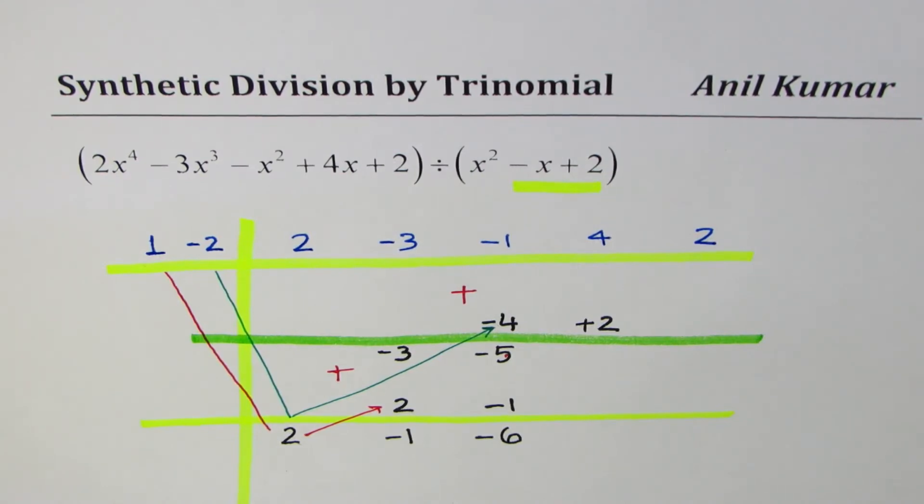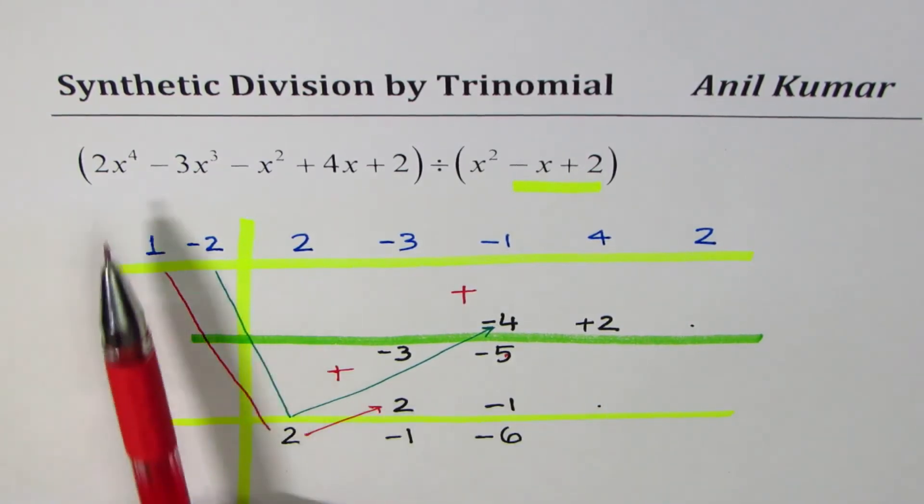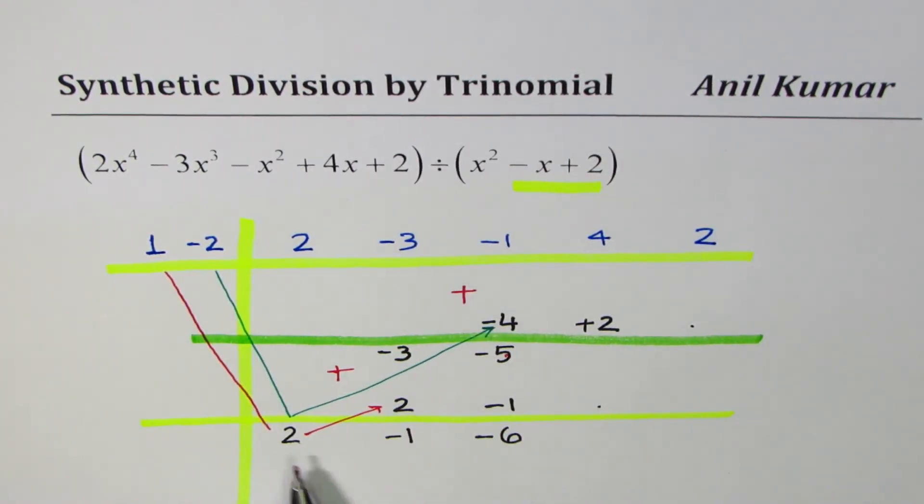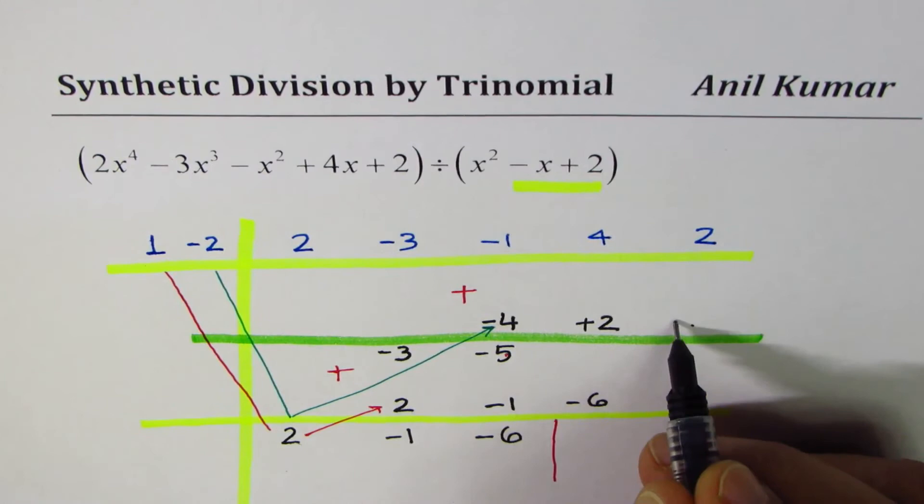What should be my next step? I have to multiply minus 6 with both these terms and write whatever I get in these locations. Now we started with degree 4, dividing by degree 2. We're expecting coefficients of degree 2, 1, and 0, and now we're getting into finding the remainder. Let's do 1 times minus 6 is minus 6, and minus 2 times minus 6 is plus 12.